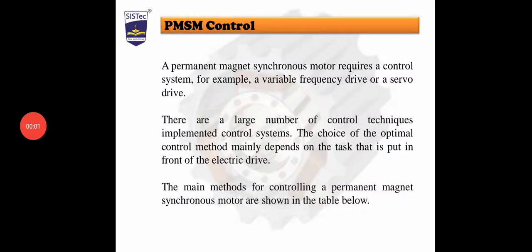Hello everyone, today we will discuss the control schemes present in permanent magnet synchronous machines. A permanent magnet synchronous motor requires a control system, for example a variable frequency drive or a servo motor drive. There are a large number of control techniques implemented in control systems. The choice of the optimal control method mainly depends on the task put in front of the electrical drive.